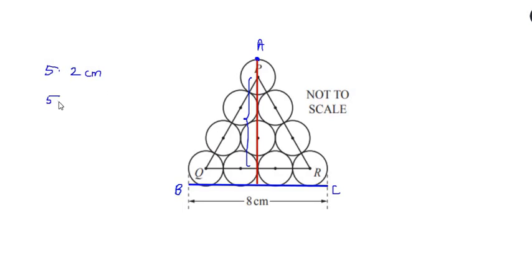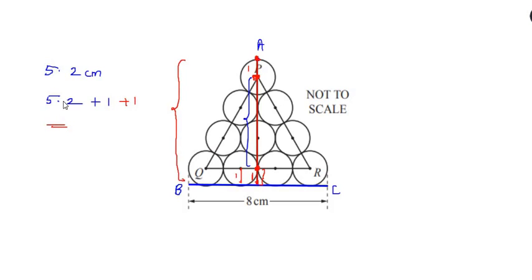To the 5.2 centimeters we need to add 1, because from point P to point A is the radius of the circle which is 1 centimeter. We also add another 1, because from the base center to BC is also 1 centimeter (the radius). So the total height from point A to BC is 5.2 + 1 + 1 = 7.2 centimeters.